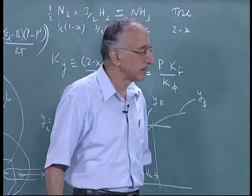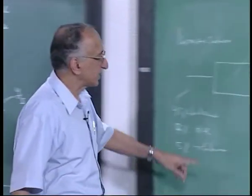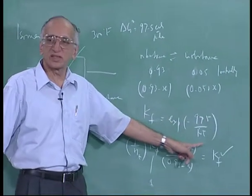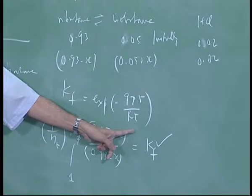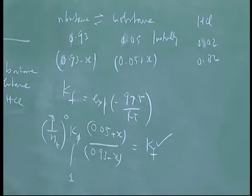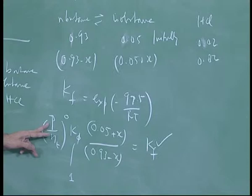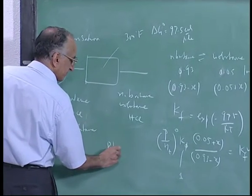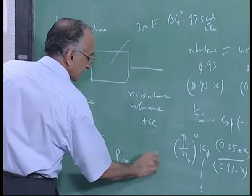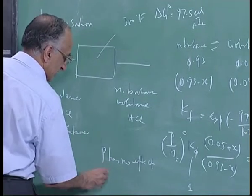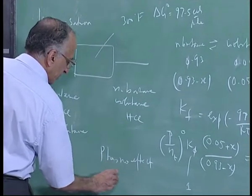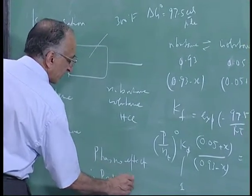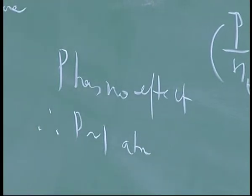So, these are the Kf is exponential of minus delta G by RT. Kp is 1 because pressure has no effect. You would be foolish to use any high pressure right. Essentially, P has no effect. Industry never uses therefore, P would be approximately 1 atmosphere whatever is convenient, usually low pressure will be used.